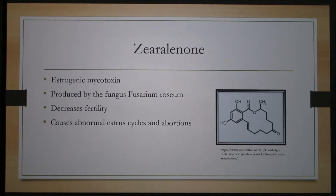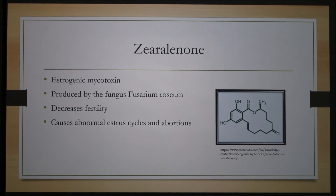Now let's review some basic and common environmental estrogens. Zearalenone is the first. It's a mycotoxin, meaning that it is produced as a byproduct of a fungus. Zearalenone causes decreased fertility, milk production, abnormal estrus cycles, and abortions when consumed in very small amounts. It can be found in corn, barley, oats, wheat, rice, and sorghum, and it is produced by the fungus Fusarium roseum.